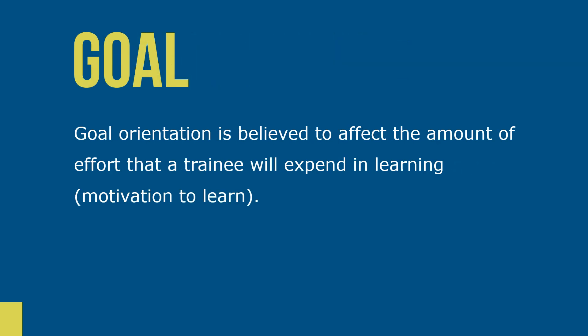Goal orientation is believed to affect the amount of effort a trainee will expend in learning and their motivation to learn. Learners with a high learning orientation will direct greater attention to the task and learn for the sake of learning, as opposed to learners with a performance orientation.